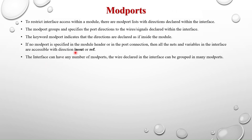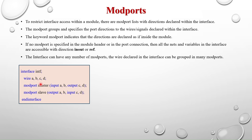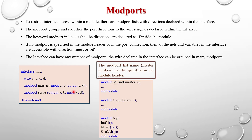The interface can have any number of modports. The wires declared in the interface can be grouped in many modports, and the same signal can be used in all these modports with different directions. Here I have a simple example — interface 'intef' with four wires A, B, C, D declared. I have two modports: master and slave. In the master modport, A and B have direction input and C and D have direction output. In the slave modport, A and B are output and C and D are input.